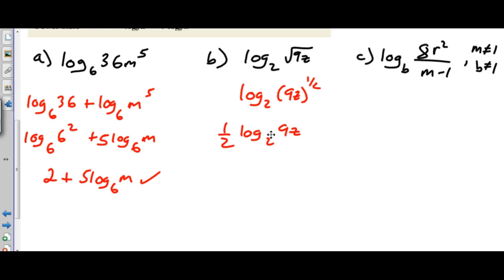Now I can use my product rule. This is pretty tricky right here - it's not just 1 half times the first log, it's going to be 1 half times the quantity log base 2 of 9 plus log base 2 of z.